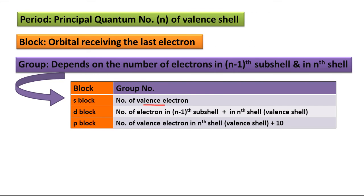If it is s-block, it is very simple — it is directly the number of valence electrons. If it is from d-block, you add the number of electrons in the (n−1) sub-shell and also the nth shell, meaning valence shell. Both shells together give the total electrons needed to decide the group. If it is from p-block, take the number of valence electrons in the nth shell and simply add 10.